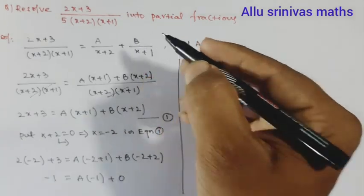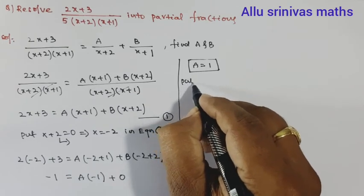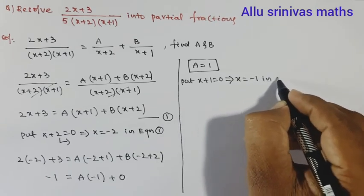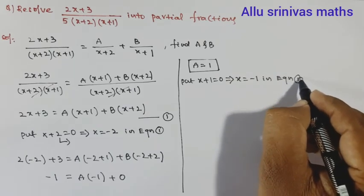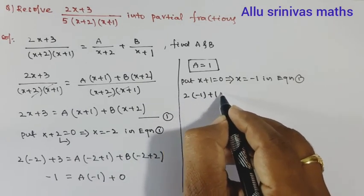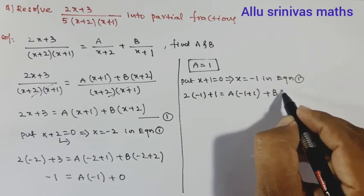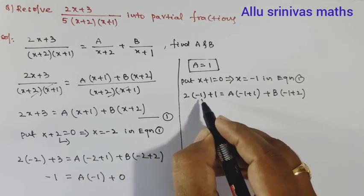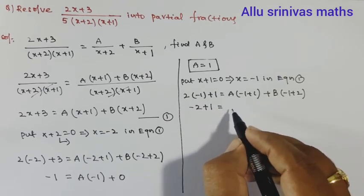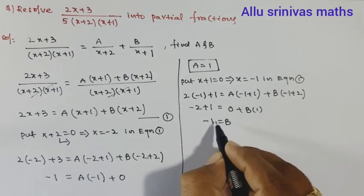Next we have to find the value of B. Let us take the second factor: x + 1 = 0, so x = −1. Substituting in equation 1: 2(−1) + 3 = A(−1 + 1) + B(−1 + 2). That gives −2 + 1 = −1; A times 0 = 0; and −1 + 2 = 1, so −1 = B. This is the required value of B.